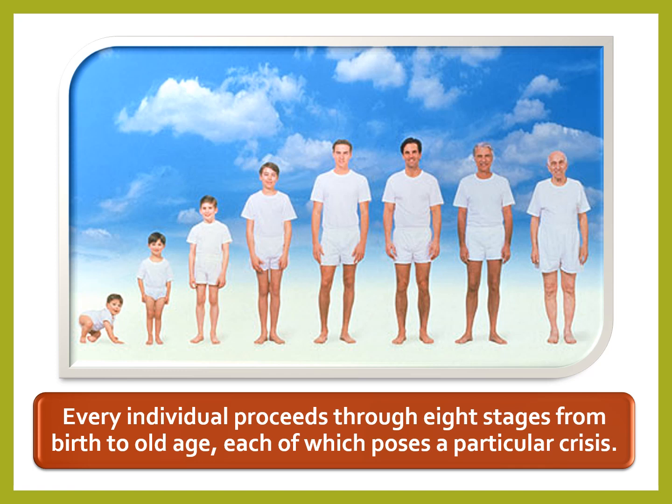Stage five is adolescence. Development centers around identity and role confusion — they may be stuck in confusion about which role to follow. This stage begins at around age twelve and lasts until age eighteen. During adolescence, you are trying to figure out who you are and establish goals and priorities for your adult life.